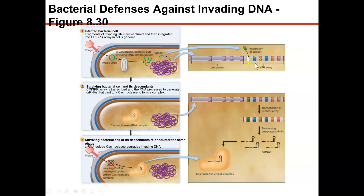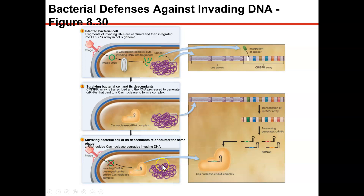You can see there are already other phage sequences stored in the array. Any cells that survive the infection will have that phage information remembered, and those cells can replicate. If a surviving bacterial cell or one of its descendants encounters the same bacteriophage again, a crRNA-guided Cas nuclease degrades the invading DNA, and the bacteria don't have to worry about being killed off. It's essentially their own memory of the pathogen.